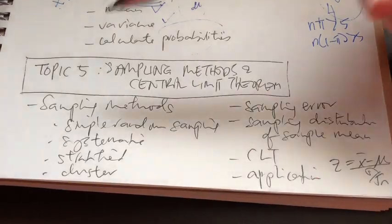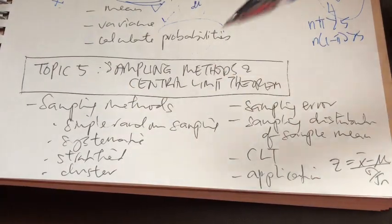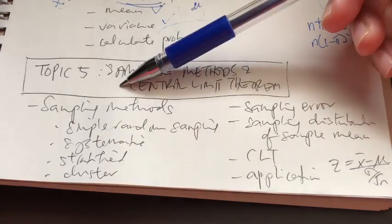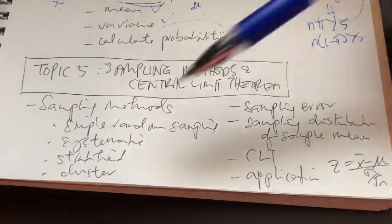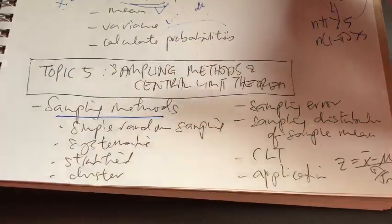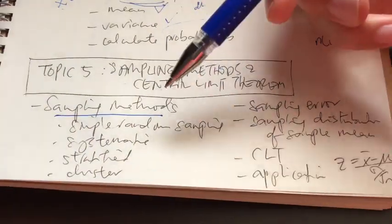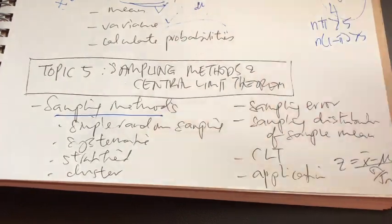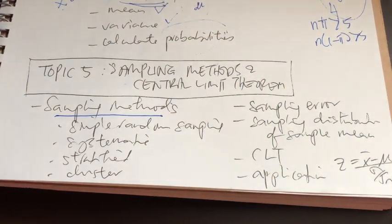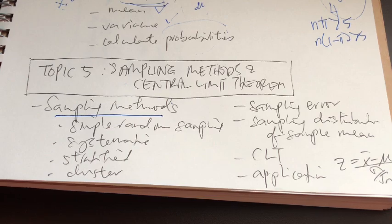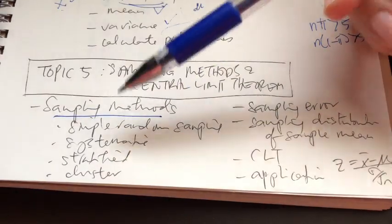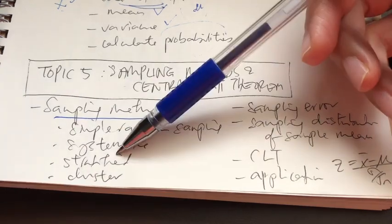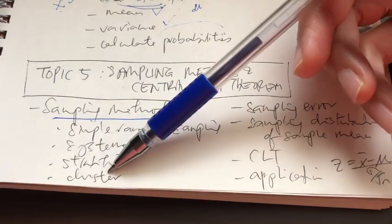Moving on to topic 5: sampling methods, or sampling distribution of sample mean and the central limit theorem. This topic is divided into two parts. The first part covers different sampling methods — how to collect a sample. Our main focus is on probability sampling methods: simple random sampling, systematic random sampling, stratified random sampling, and cluster sampling.